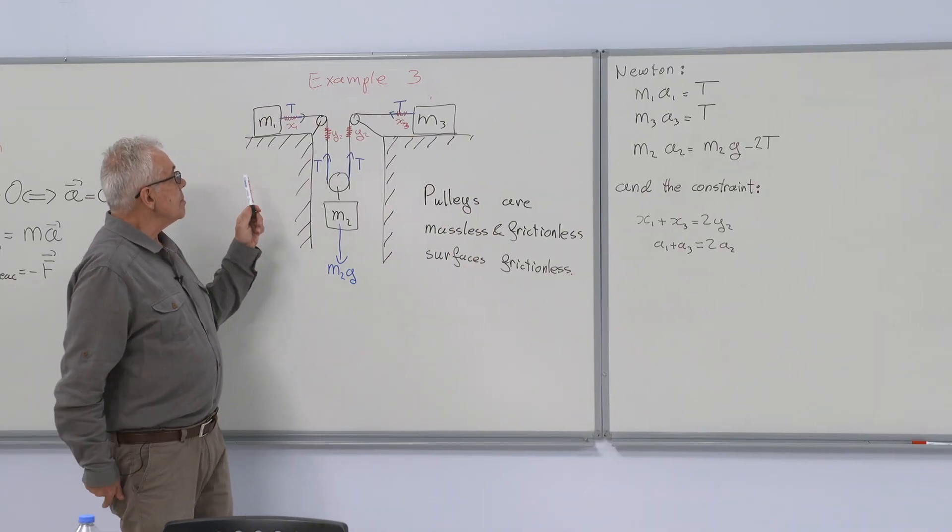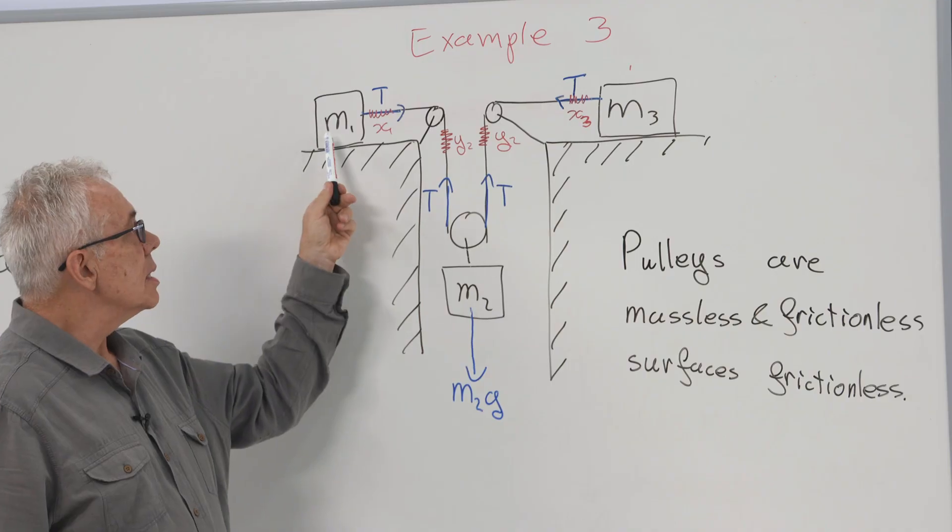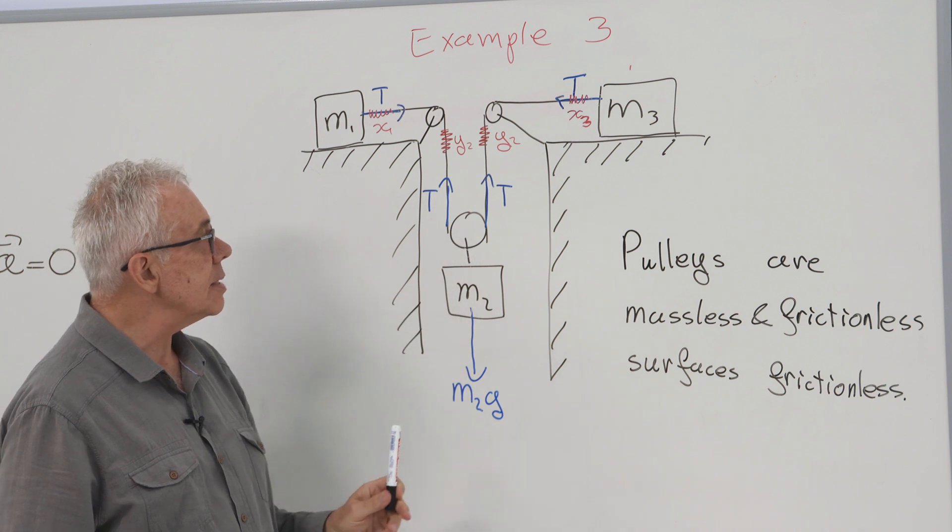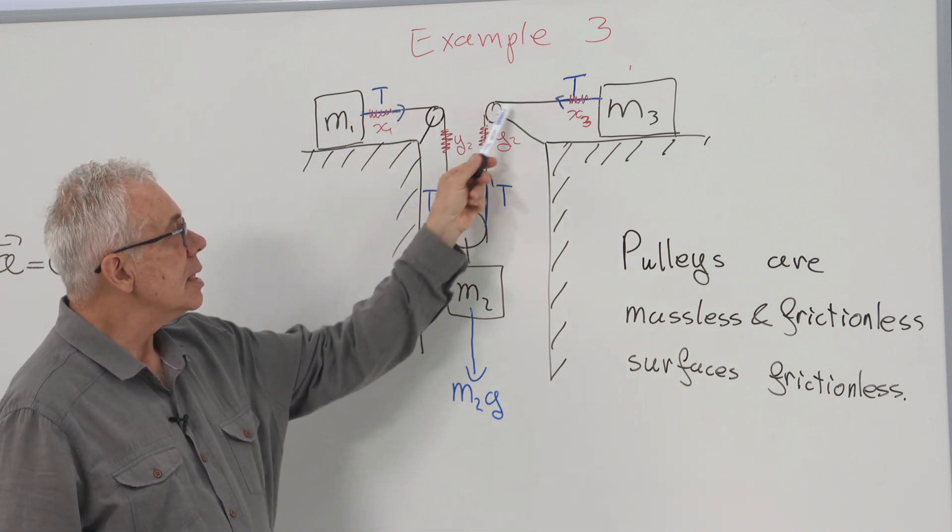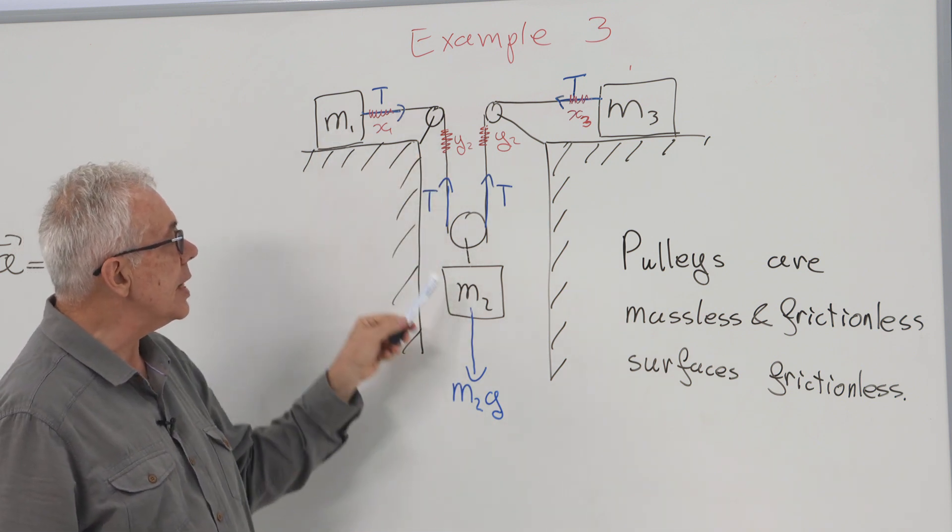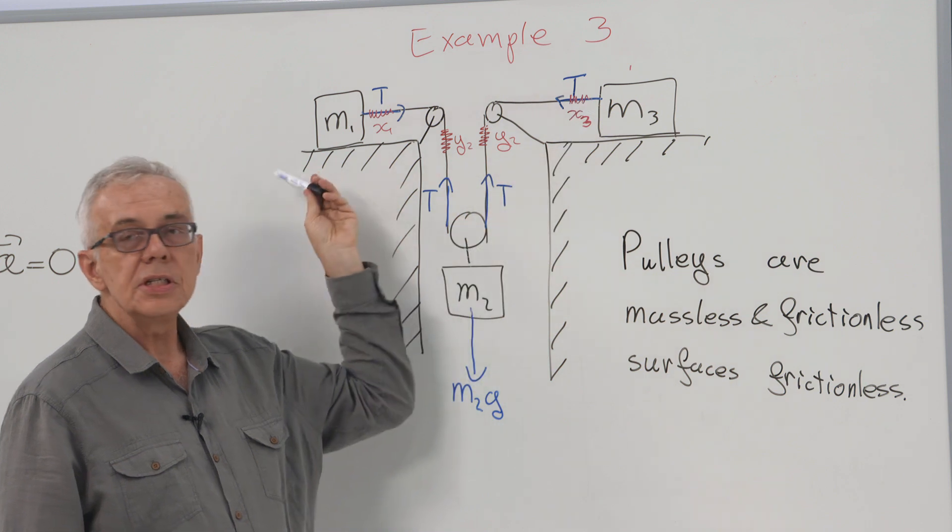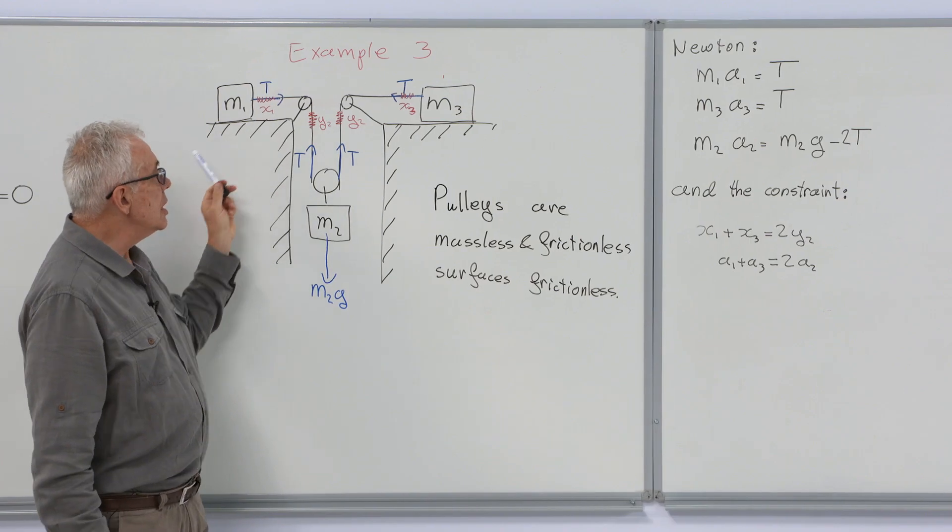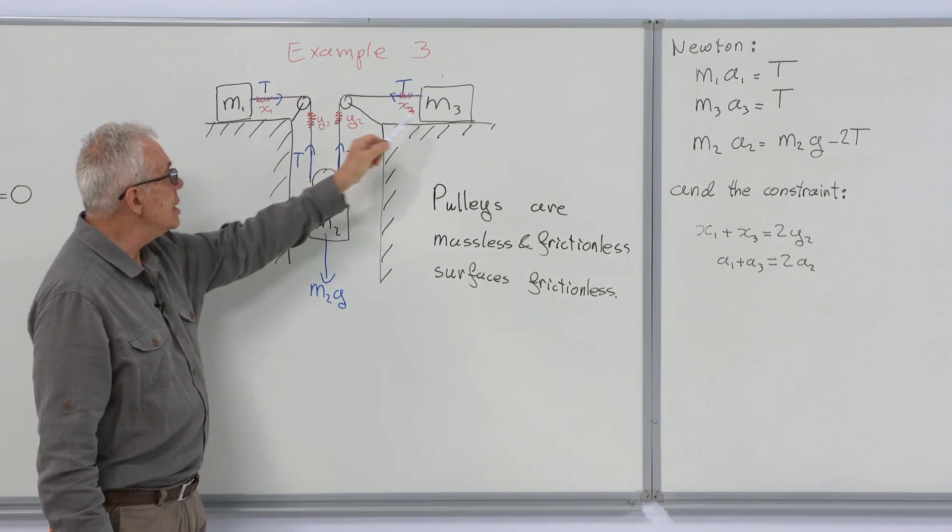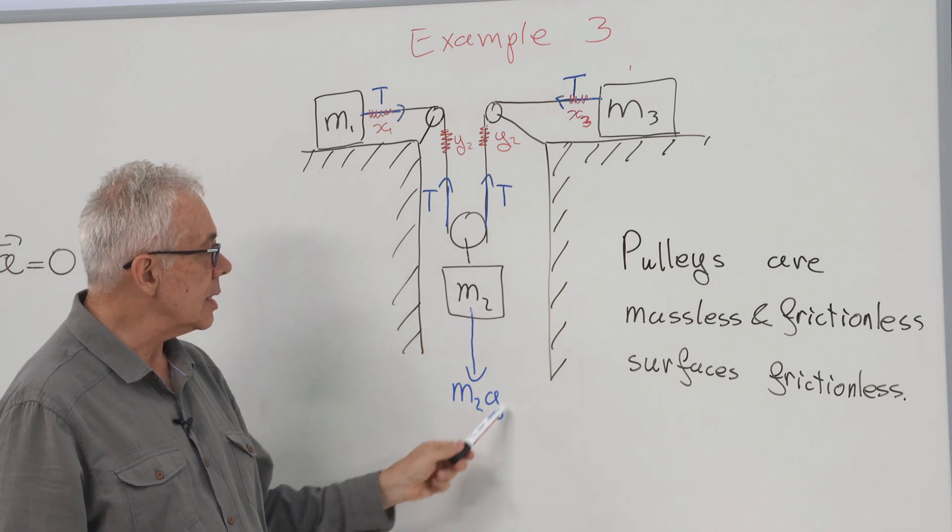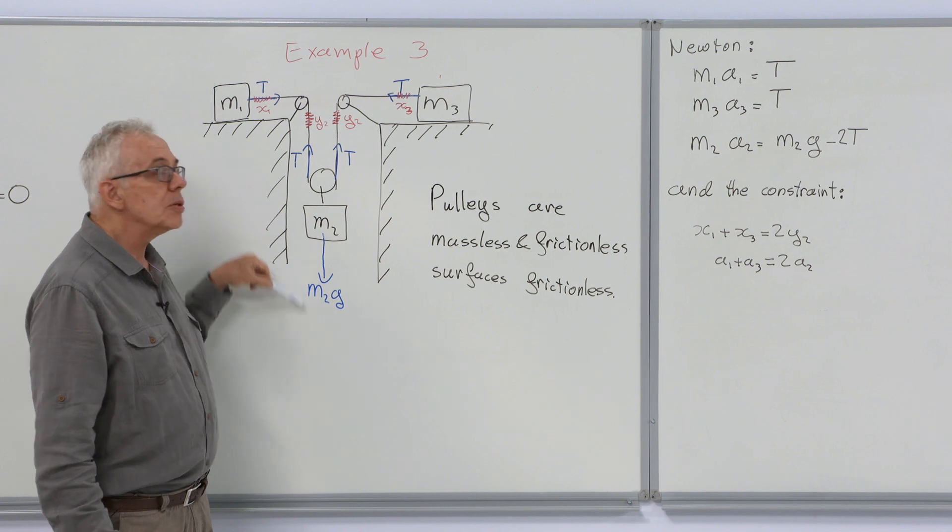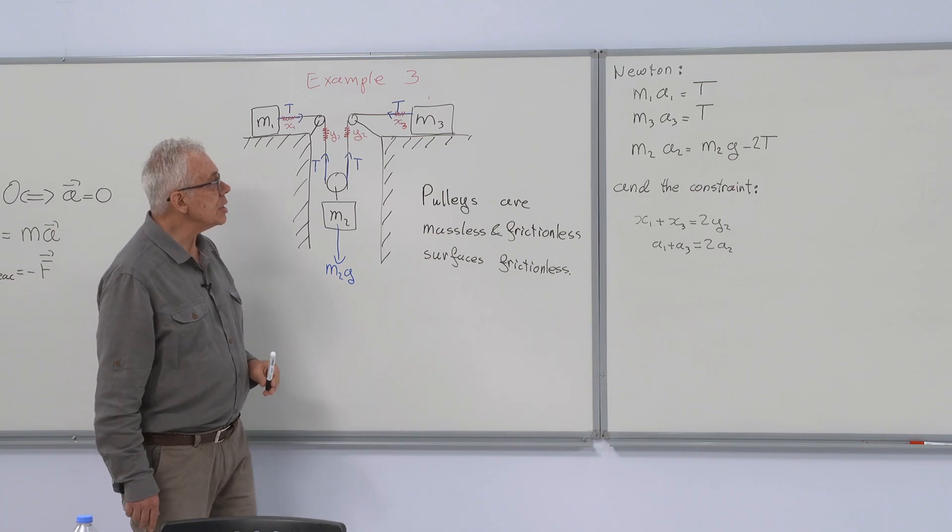In our next example, we have three masses. The surfaces are frictionless, and the pulleys are massless and frictionless. The string is of constant length. And in this example, we want to find the accelerations of the three masses. We draw the free body diagrams. The only force acting on this is the T. Similarly, T. On the hanging mass, we have 2T pulling it up and M2g pulling it down.